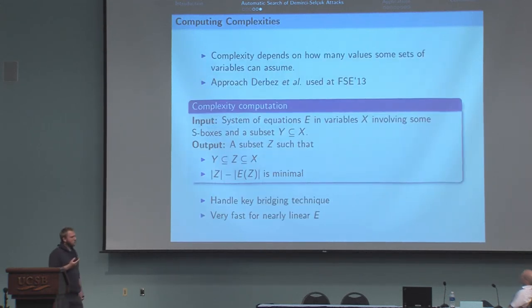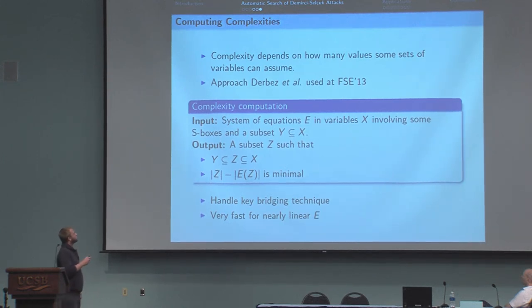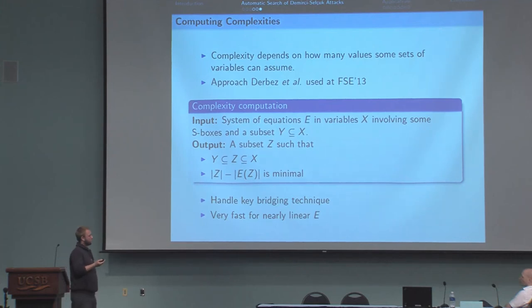There is a last component in our algorithm. Because we want to make an attack finder, we need to be able to compute the complexity of the attacks in order to find the best one. And doing so requires to compute how many values some sets of variables can assume.